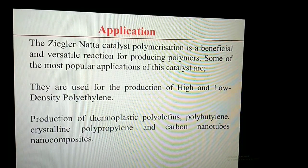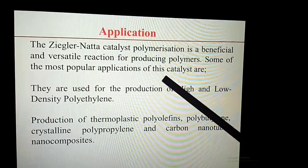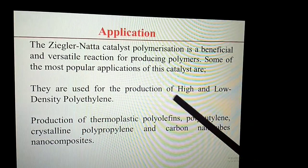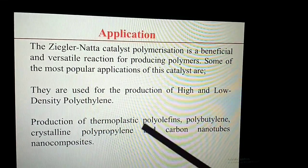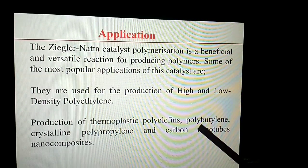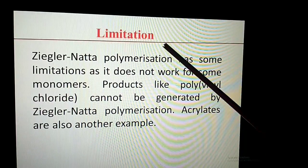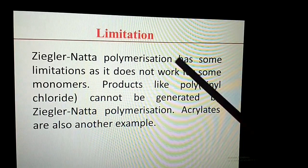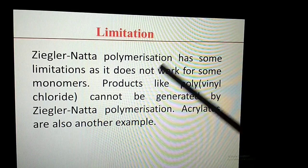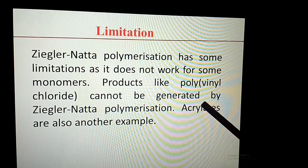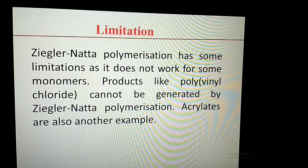Now the applications of Ziegler-Natta catalysis: it is a versatile reaction for producing different types of polymers. For example, it is used for the production of high density and low density polyethylene, thermoplastic polymers such as polybutylene, polypropylene, and carbon nanotubes and nanocomposites. As for the limitations, it is not applicable for some monomers — for example, polyvinyl chloride cannot be produced using Ziegler-Natta catalysis, and polyacrylates are also not formed.